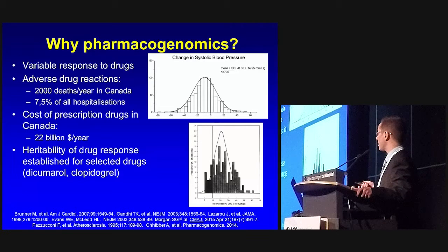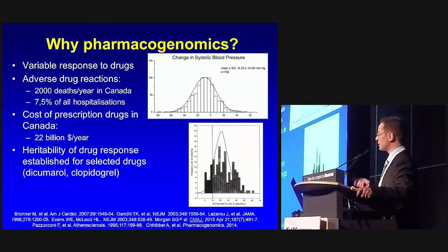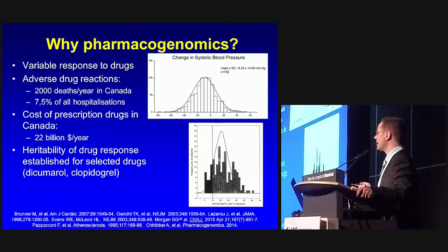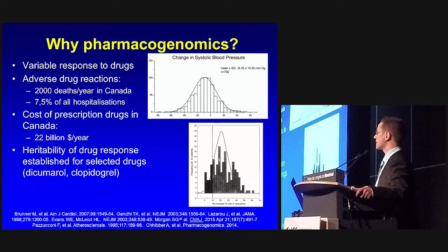An important prerequisite behind the idea of pharmacogenomics is that the heritability of drug response has been demonstrated for some drugs, and that many genetic polymorphisms are known to influence the expression of, for example, isoenzymes that commonly metabolize drugs.